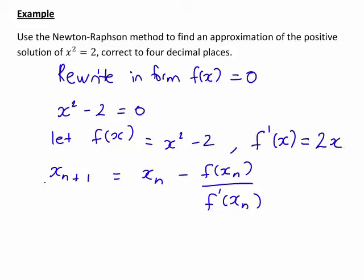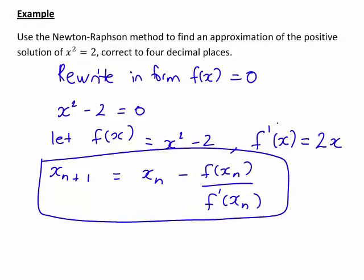In this case our formula will become x_{n+1} = x_n - (x_n² - 2)/(2x_n).